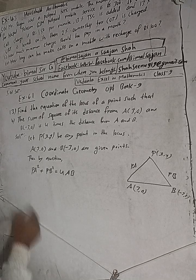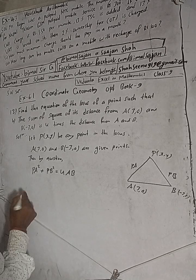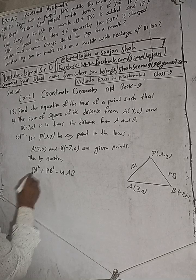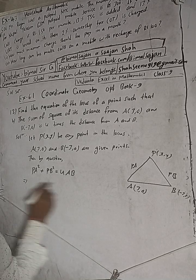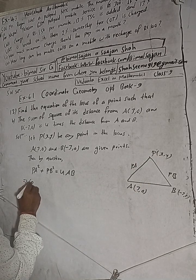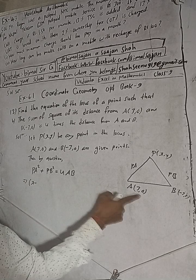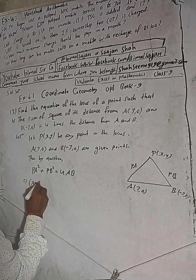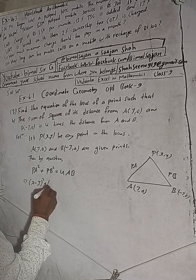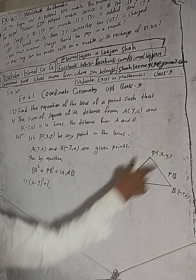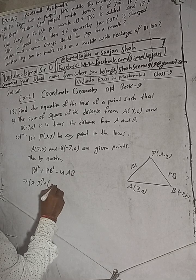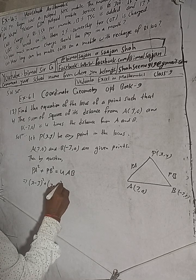Now, PA² means the distance from P(x,y) to A(3,0), which is (x minus 3) squared plus (y minus 0) squared.